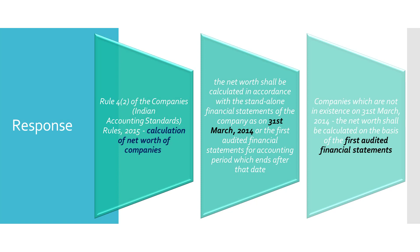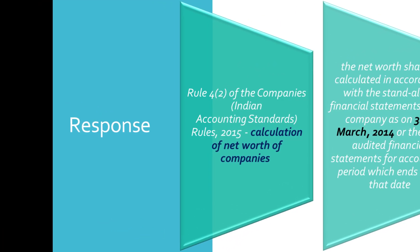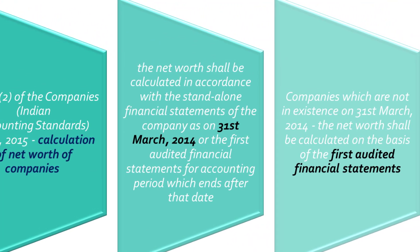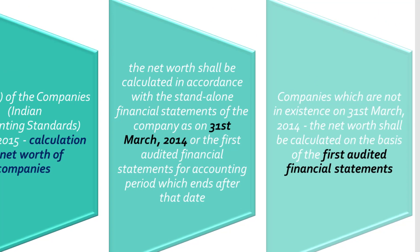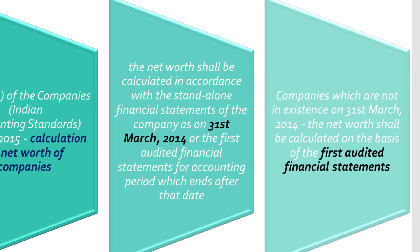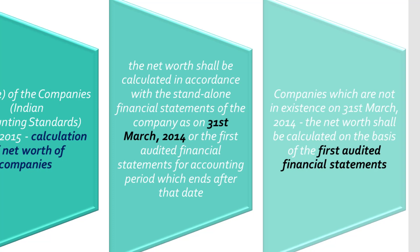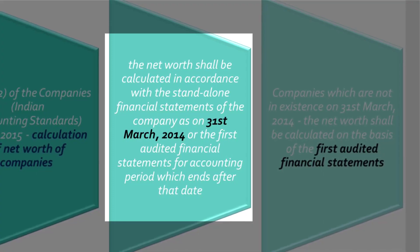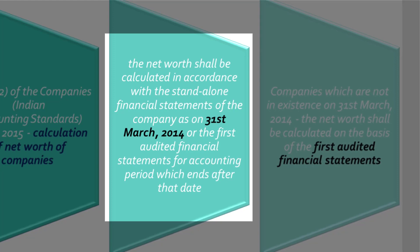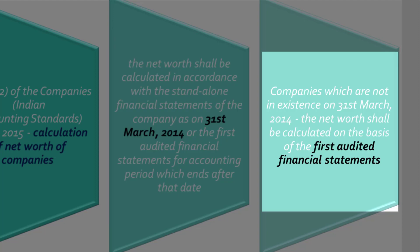Under Rule 4(2) of the Companies (Indian Accounting Standards) Rules, 2015, the calculation of net worth of the company is discussed for applicability purposes. There are two categories: one is a company which is in existence as at March 31, 2014, and the other is companies not in existence as on March 31, 2014. In the first case, net worth has to be seen as at March 31, 2014, or the first audited financial statement for the accounting period ending after that date. In the second case, where the company is not existing as at March 31, 2014, net worth is calculated on the first audited financial statements after that date.